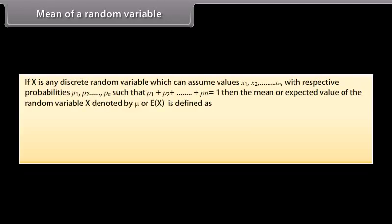Mean of a Random Variable: If X is any discrete random variable which can assume values X1, X2, ..., Xn with respective probabilities P1, P2, ..., Pn such that P1 + P2 + ... + Pn = 1, then the mean or expected value of X, denoted by μ or E(X), is defined as μ = E(X) = Σ (i=1 to n) Pi·Xi.